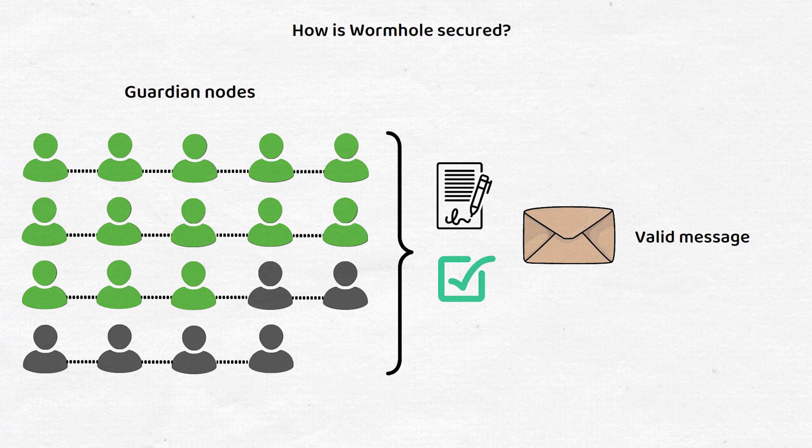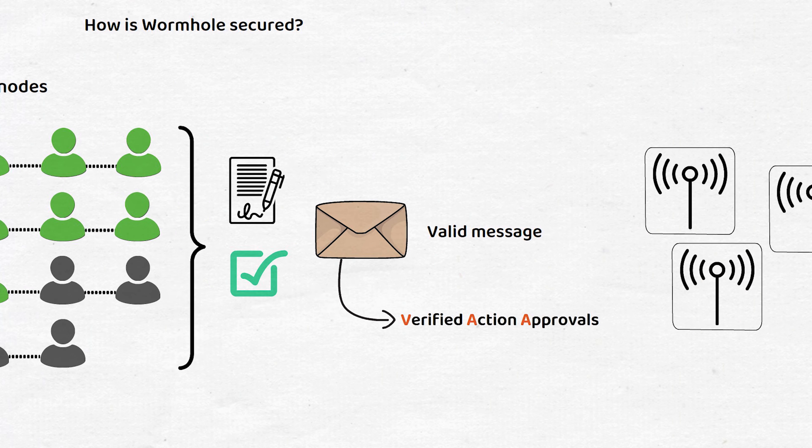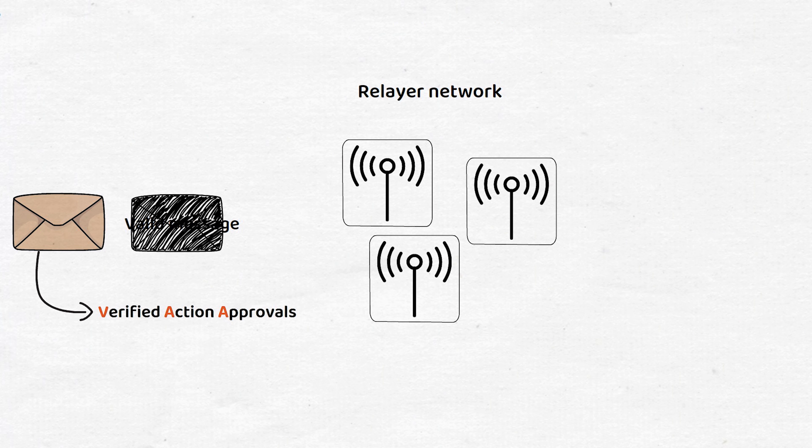These signed messages are known as verified action approvals, or VAAs, and these messages are then relayed to their destination protocol via the relay network.